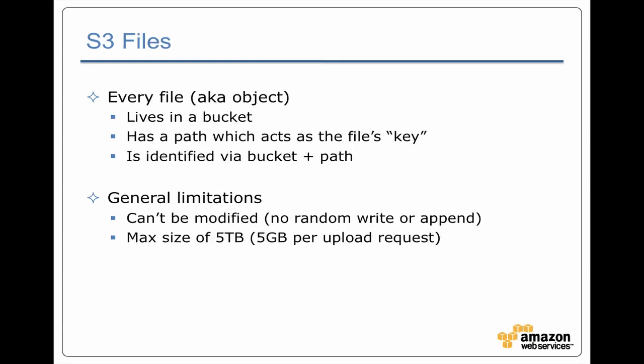Each file in an S3 bucket has a path that uniquely identifies it inside that bucket. Assuming you have the bucket and the path, you get a unique reference to the file. Files are typically written and then read or deleted — you can't do random access into a file to modify it. There's a maximum file size of five terabytes. A more common restriction is that every PUT or POST request has a five gigabyte limit, though S3 now supports multi-part uploads, which means you can create a five-terabyte file by doing multiple uploads of up to five gigabytes each.